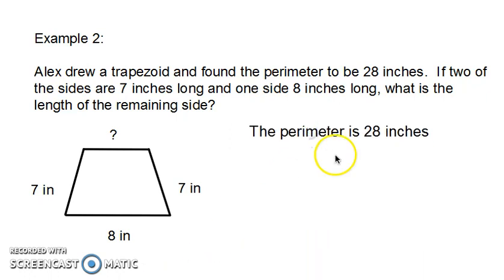The perimeter is 28 inches. We're going to start with the sides that are given to create an equation. It says 7 plus 8 plus 7 plus the unknown equals 28 inches.